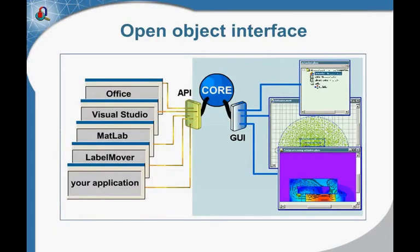What is also unique about QuickField? We have an open object interface, so it is possible to utilize not only the user interface and control QuickField with your mouse and keyboard strokes. It is also possible to connect QuickField to other applications which interact with the QuickField core through an application programming interface. This way you may use Excel scripts or MATLAB scripts, do your own programming, or use the parametric analysis tool called LabelMover, which also interacts with the QuickField core through the same API, called ActiveField. There are plenty of possibilities and most importantly, all of them are implemented in a very simple way.